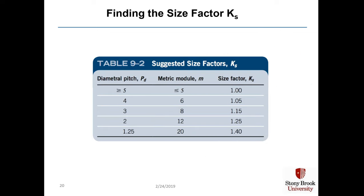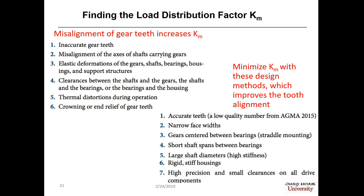The size factor K_S is found from Table 9-2 and depends on the diametral pitch. If the diametral pitch P_D is 5 or greater — which most gears have — the size factor is simply 1. The load distribution factor K_M depends on the alignment of your gear teeth in operation. Inaccurate teeth or significant misalignment gives one extreme value, while good clearances, minimal elastic deformation, and well-crowned gear teeth give the opposite extreme.